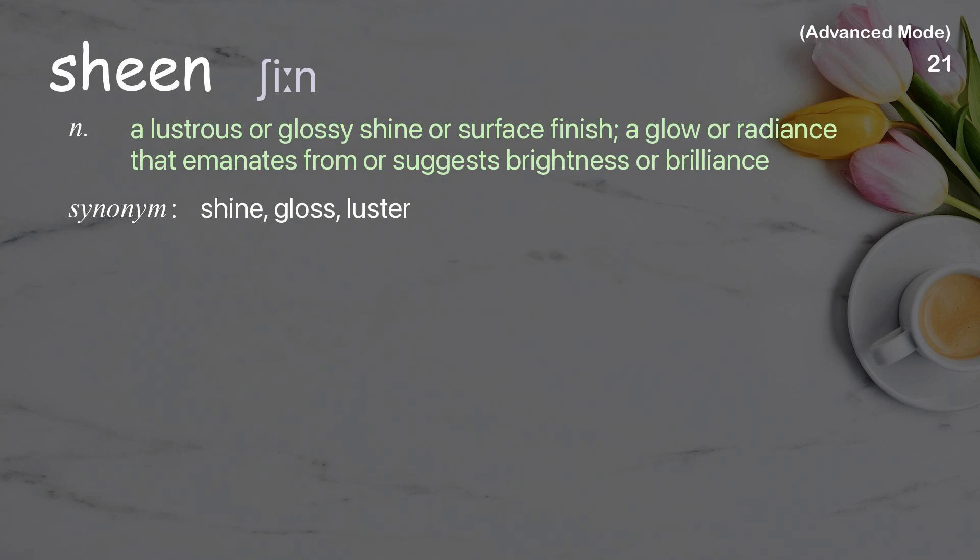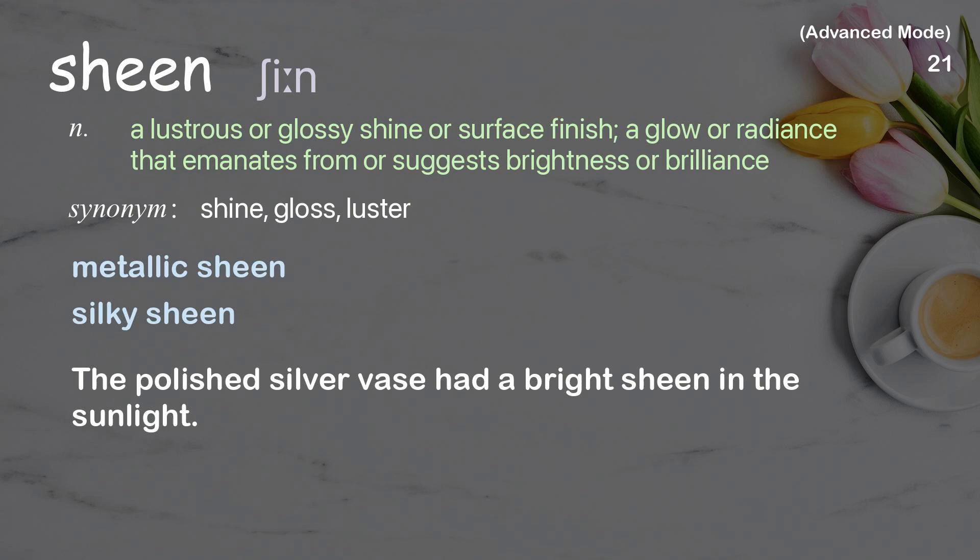Sheen: a lustrous or glossy shine or surface finish; a glow or radiance that emanates from or suggests brightness or brilliance. Examples: metallic sheen, silky sheen. The polished silver vase had a bright sheen in the sunlight.